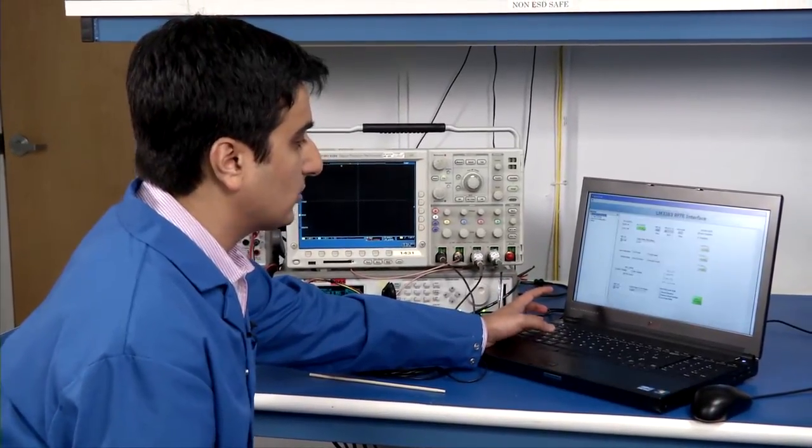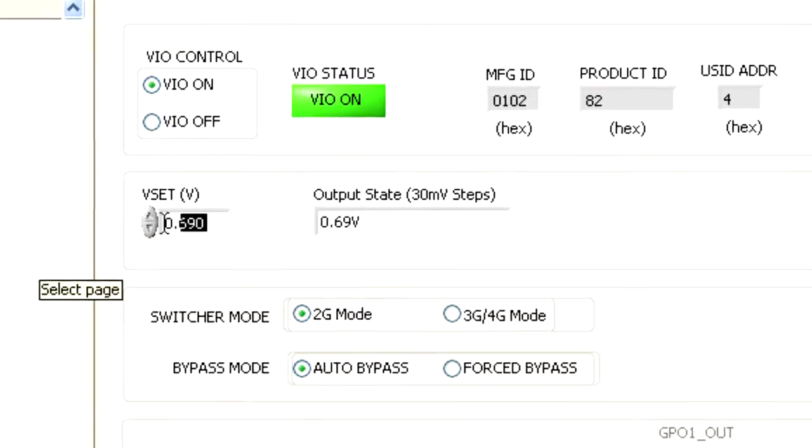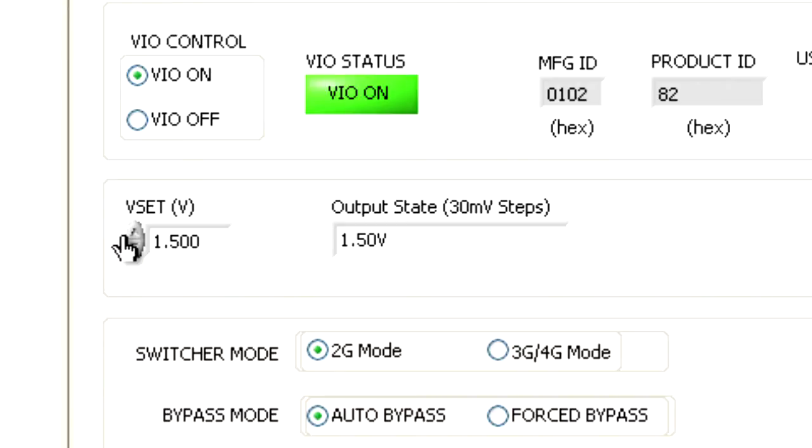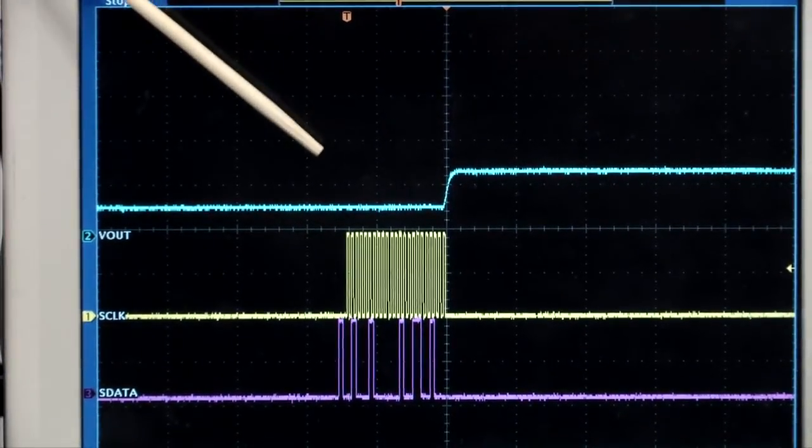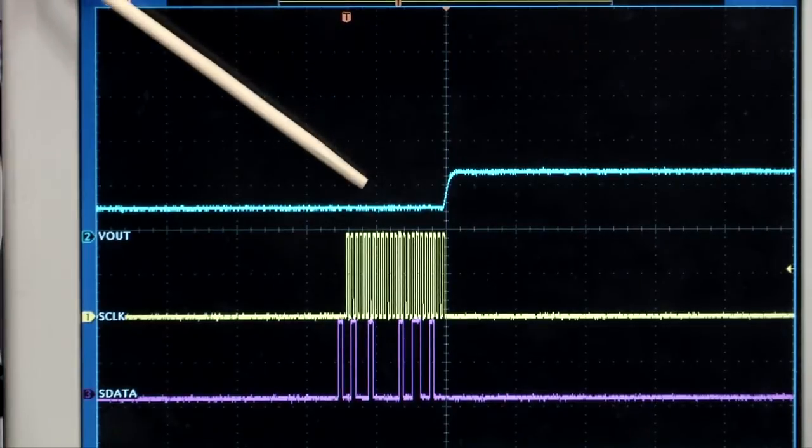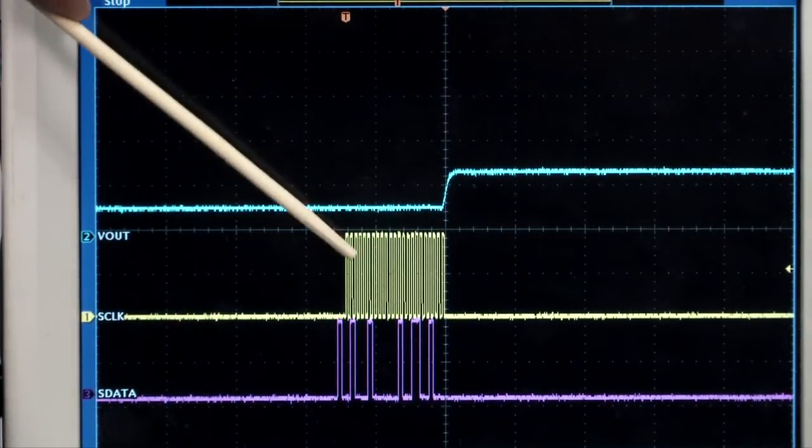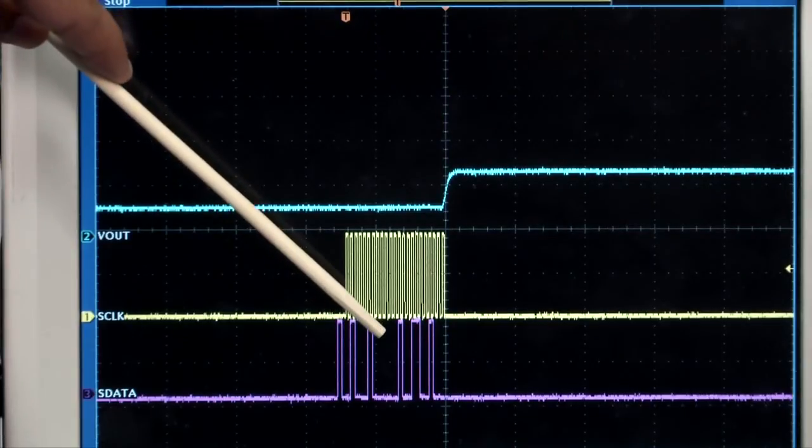Controlling the device is pretty simple. We can go to the user interface, which is provided with LM3263 kit. And here I'm going to show you how to change the output voltage from 0.7V to 1.5V. On the screen here, you can see the output voltage change from 0.7V to 1.5V once the clock and data were sent through the RFFE.